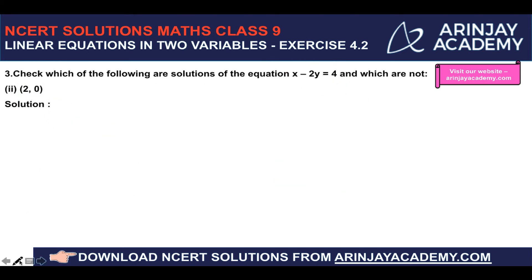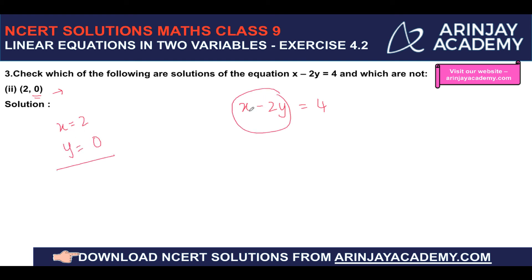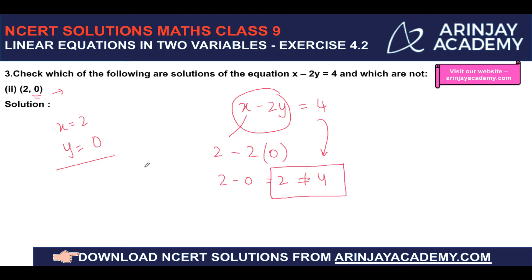For (2, 0): substituting x equals 2 and y equals 0 into x minus 2y equals 4 gives 2 minus 2 times 0, which equals 2. But 2 is not equal to 4, so (2, 0) is not a solution of this linear equation.